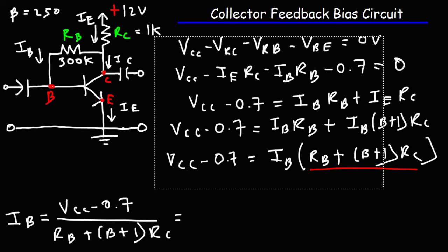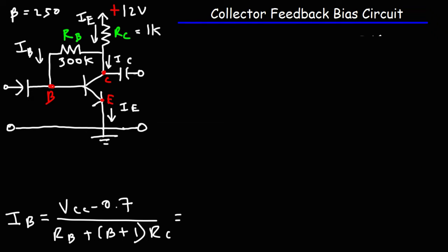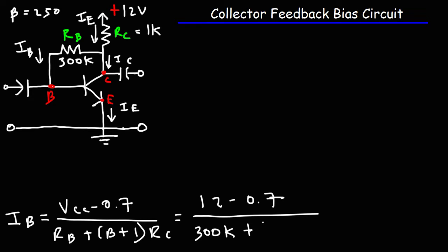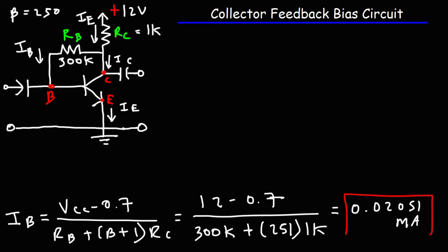Plugging in the values: 12 volts minus 0.7, divided by RB of 300 kilohms plus 251 times RC of 1 kilohm. So 11.3 divided by 551 kilohms gives a base current of 0.02051 milliamps. That's the base current in this collector feedback bias circuit.